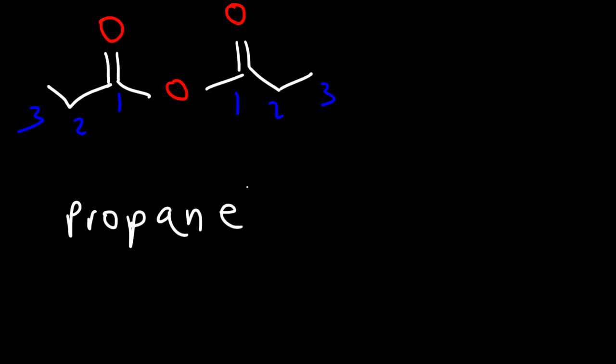Now let's move on to our next example. Based on the last example, go ahead and name this acid anhydride. So we have another symmetrical anhydride. And there's three carbons on each side. So three carbons is associated with the word propane. But we're going to take off the E and replace it with oic. So this is called propanoic anhydride.